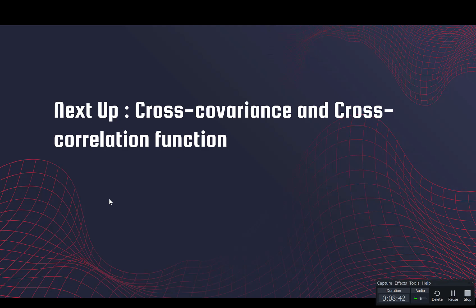In the next video we'll take a look at the cross covariance and the cross correlation. So far we were looking at the covariance of a time series x at different time points, or time series y at different time points — covariance between y_t and y_s, or between x_t and x_s. But what if we have two different time series x and y? Then the covariance between x_t and y_s is the cross covariance, and similarly we can extend this to the cross correlation function.